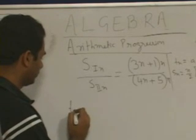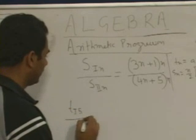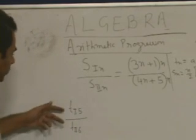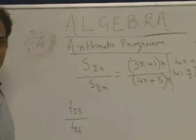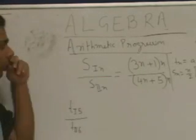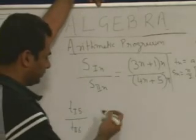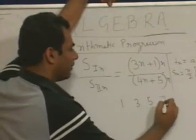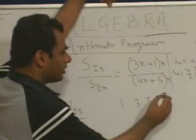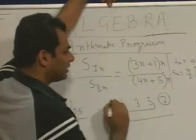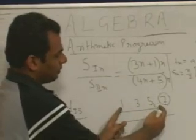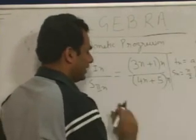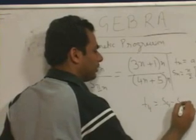Next, try to find out the ratio of T1_5 divided by T2_6. Here the ratio of the sum is given and you need to find the ratio of the terms. Always remember: if an AP series is 1, 3, 5, 7 — the fourth term is nothing but the sum of the first 4 terms minus the sum of the first 3 terms. So T4 = S4 − S3, and we can apply the same logic here.